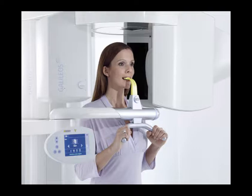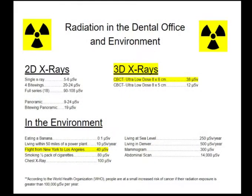Let me explain what a 3D x-ray is. The proper term is cone beam computed tomography, or CBCT. It's basically the dental version of a CAT scan but with much lower doses of radiation. For example, a full 3D x-ray using our ultra-low dose settings exposes the patient to less radiation than a cross-country flight from New York to Los Angeles. This equates to approximately six routine digital dental x-rays.